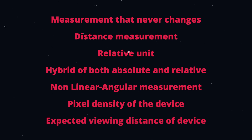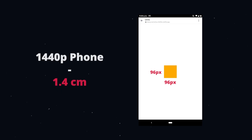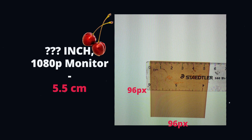Here are some objective facts about the CSS pixel unit. On my 27-inch 1080p monitor, a box with a width and height of 96 pixels measures almost 3 centimeters with a ruler, when it should be 2.54 centimeters (1 inch). On my phone with 1440p resolution, the size is 1.4 centimeters. On my 27-inch 1440p monitor, it's 2.2 centimeters. And on my TV, something above 50 inches, the box measures 5.5 centimeters.